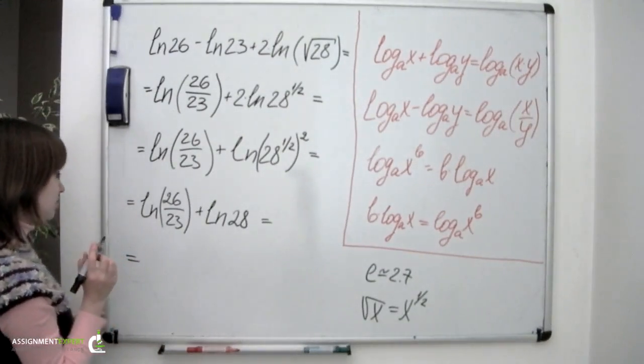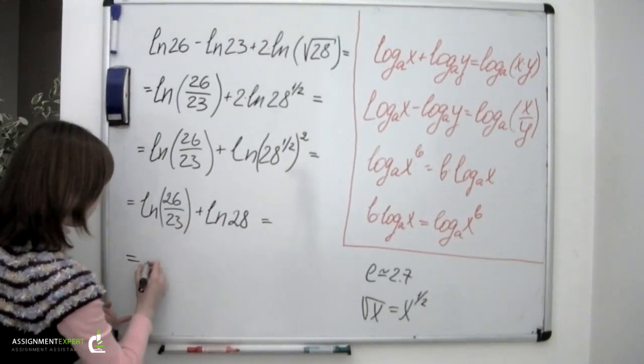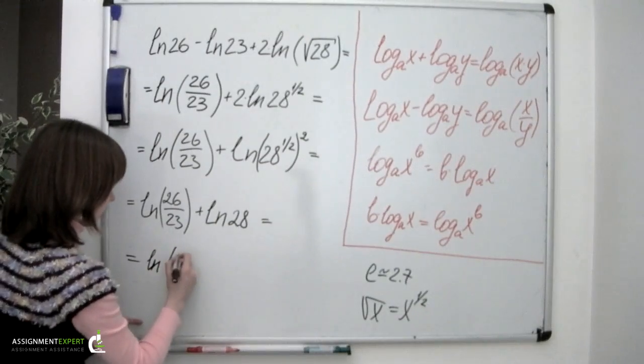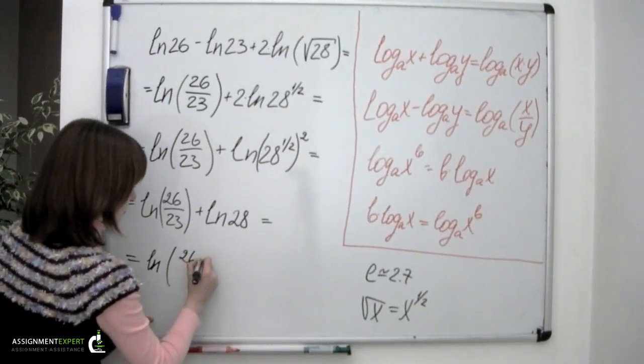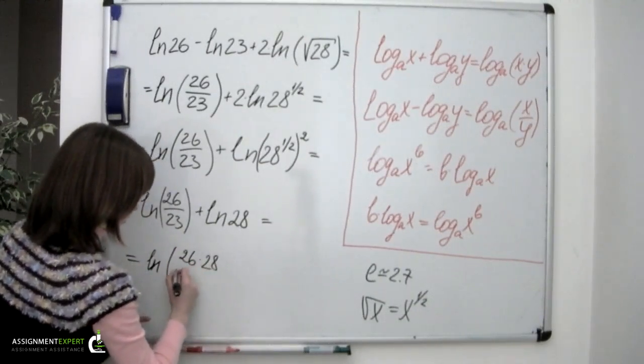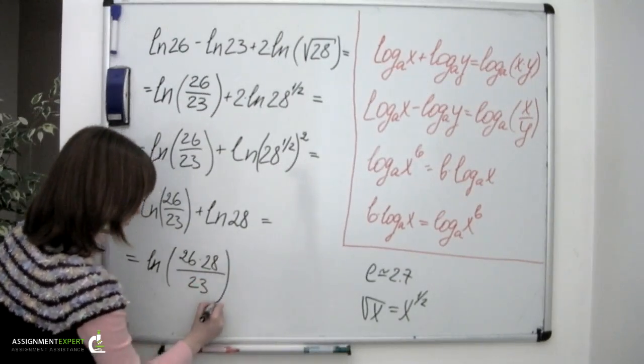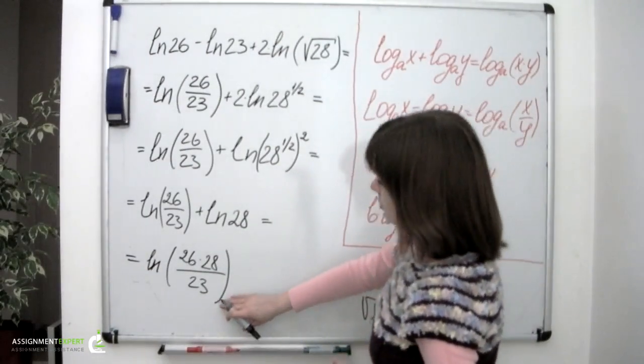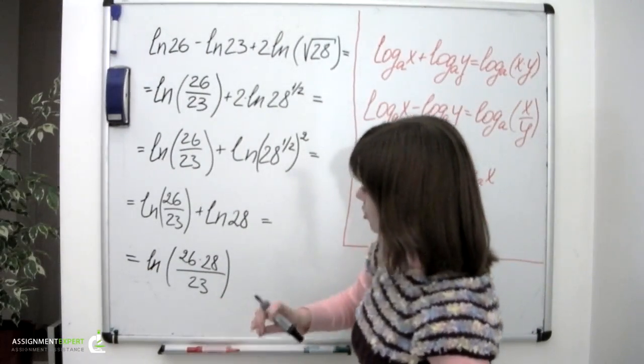And now we can apply the very first formula. So we'll have ln of 26 times 28 over 23. And this expression we should evaluate it.